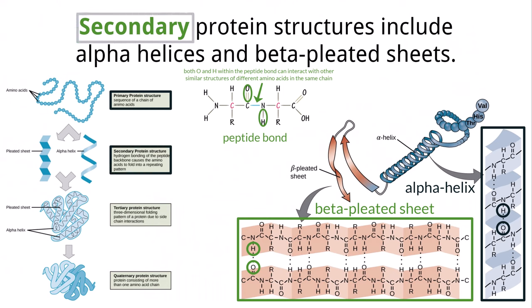So remember that the straight chain of amino acids is the primary structure, and the initial hydrogen bond interactions between the oxygen and hydrogen atoms of the peptide bond create alpha helices and beta pleated sheets, which are the secondary structure.